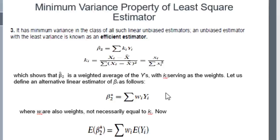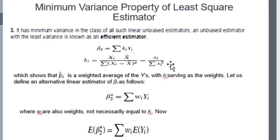The third property is the minimum variance property of the least square estimators. The estimators will have minimum variance in the class of linear unbiased estimators. An unbiased estimator with least variance is known as an efficient estimator. Beta2-hat equals sigma(ki * yi), where ki = xi / sigma(xi²), showing that beta2-hat is a weighted average of y with ki serving as weights.